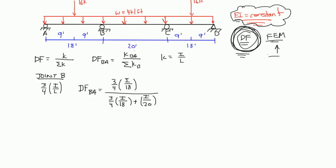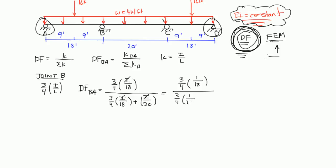The reason the K factor for BC is not three-quarters is because we only modify the outside spans — A and D. So the only K values we modify are spans AB and CD. Solving this out, since the I's are constant they cancel, and you get three-quarters of 1/18 over three-quarters of 1/18 plus 1/20. If you solve that out, the distribution factor for BA is 0.453.